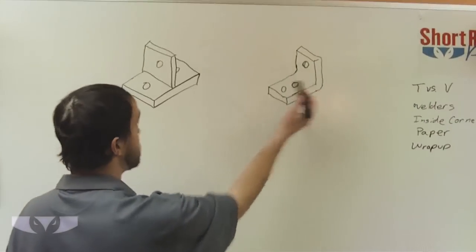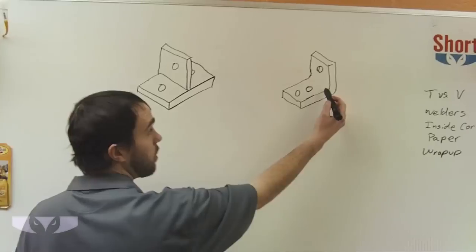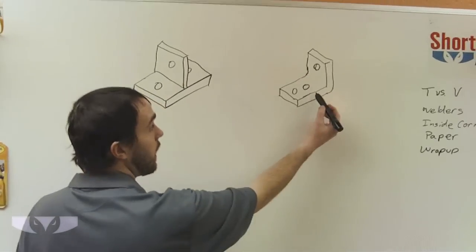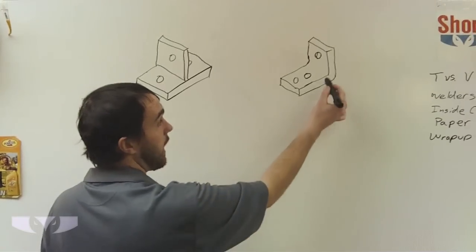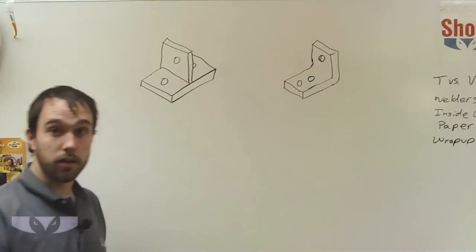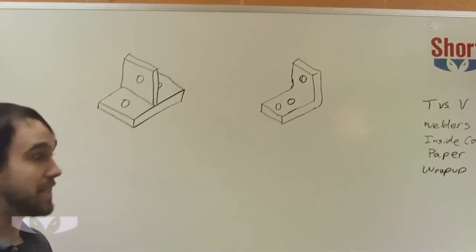But I'm going to show you that a simple design change is really going to save you some money. All you need to do is instead of having this in the middle, move it off to the side and just move your second hole back to the middle over here. This way we can make it with forming or bending instead of welding.